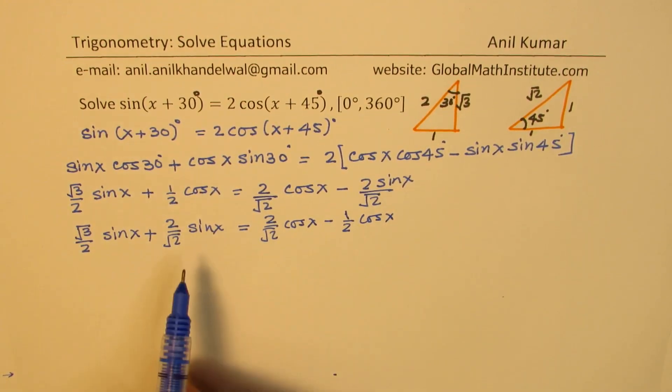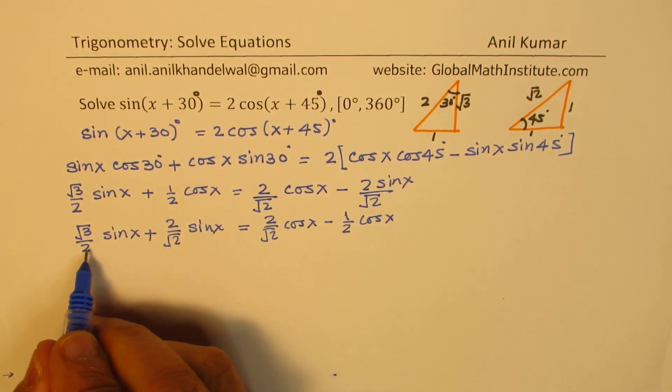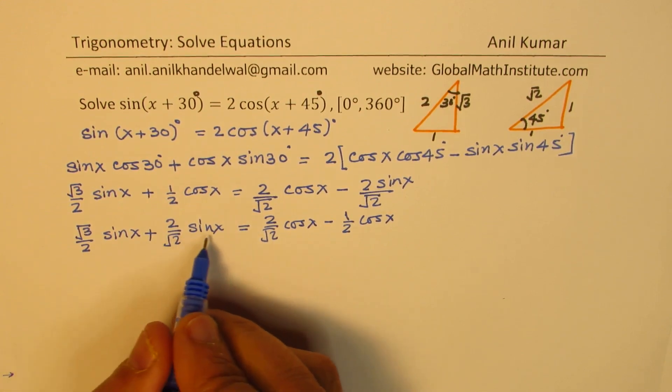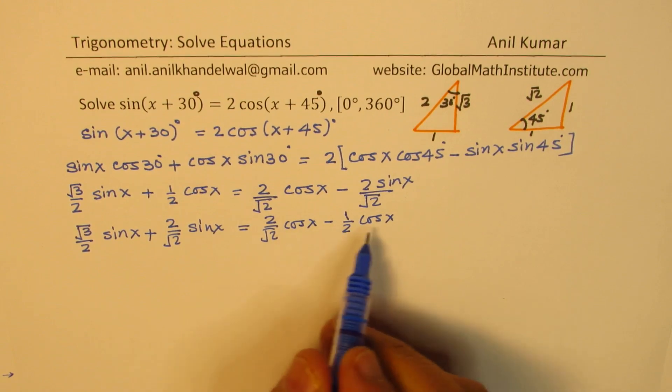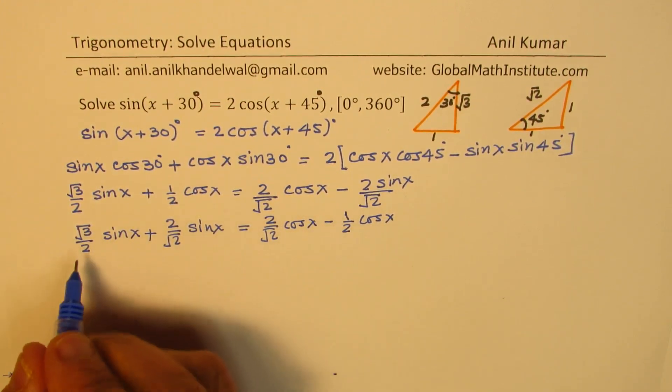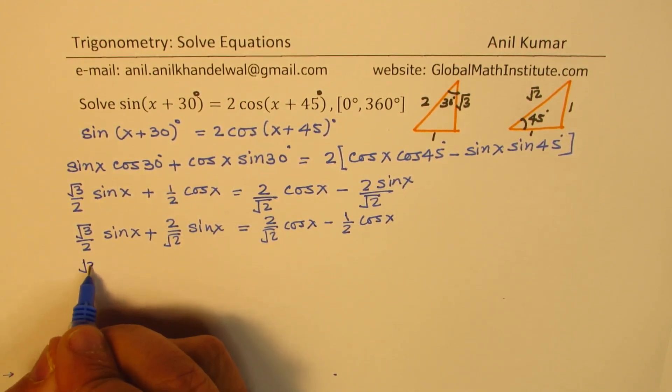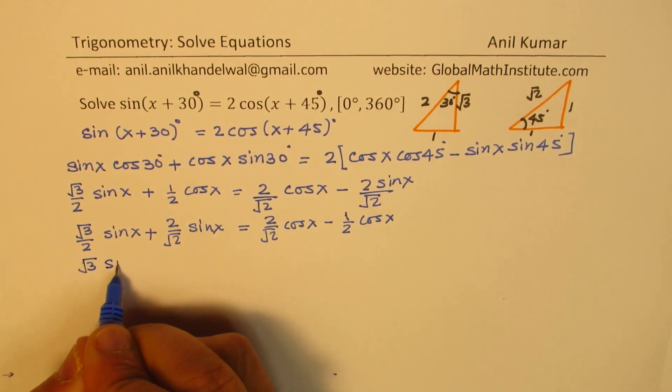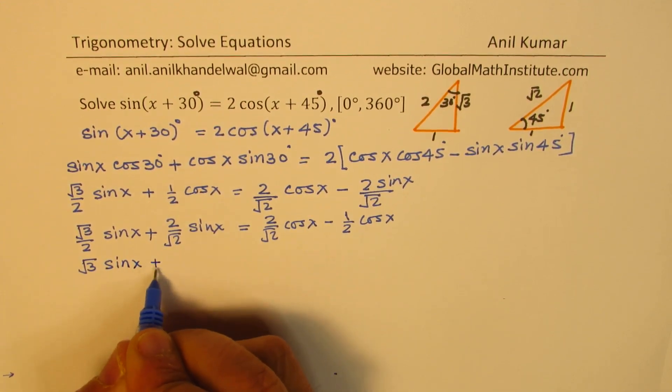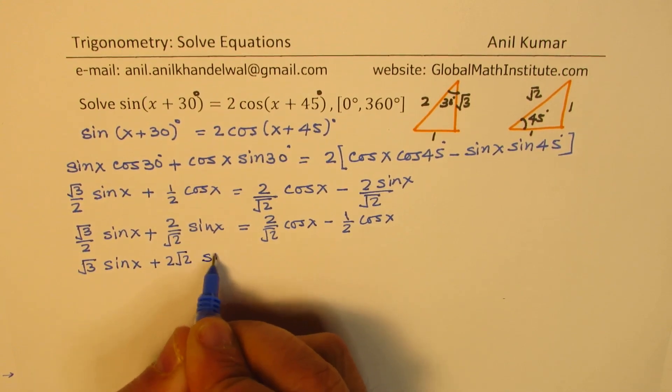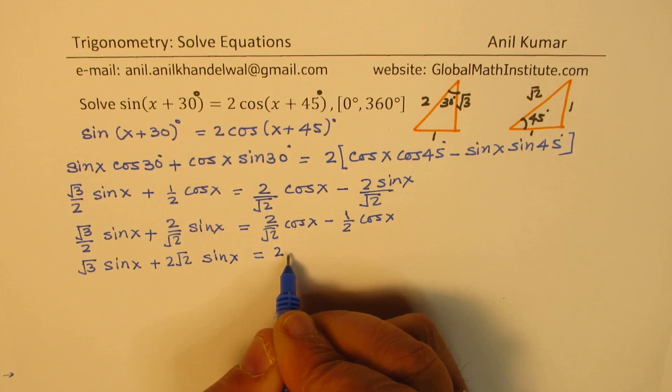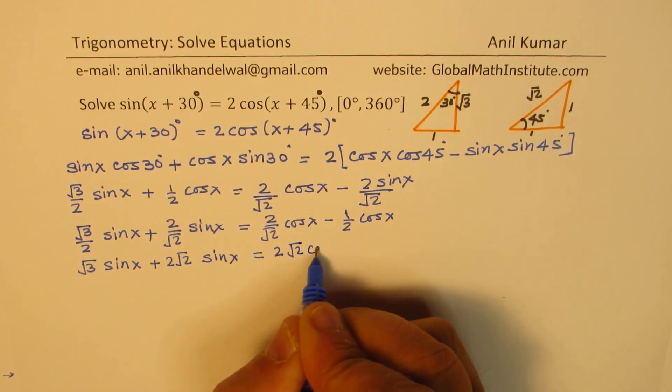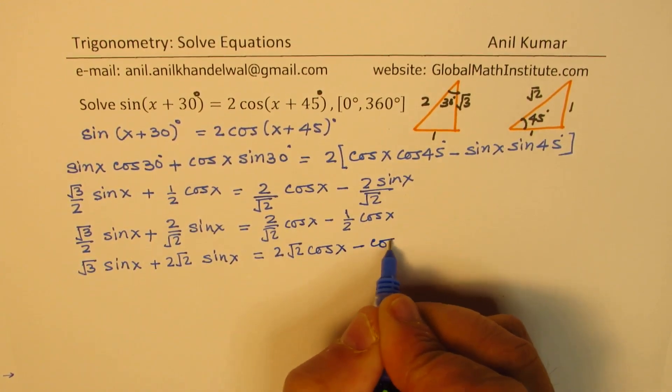So we can take sine x and cos x common on left and right side. When I take sine x common, let's multiply everything by 2 first. So here we get √3 sin x plus 2√2 sin x equals to 2√2 cos x minus cos x. That would be better. So we just multiplied everything by 2 to get rid of this denominator.